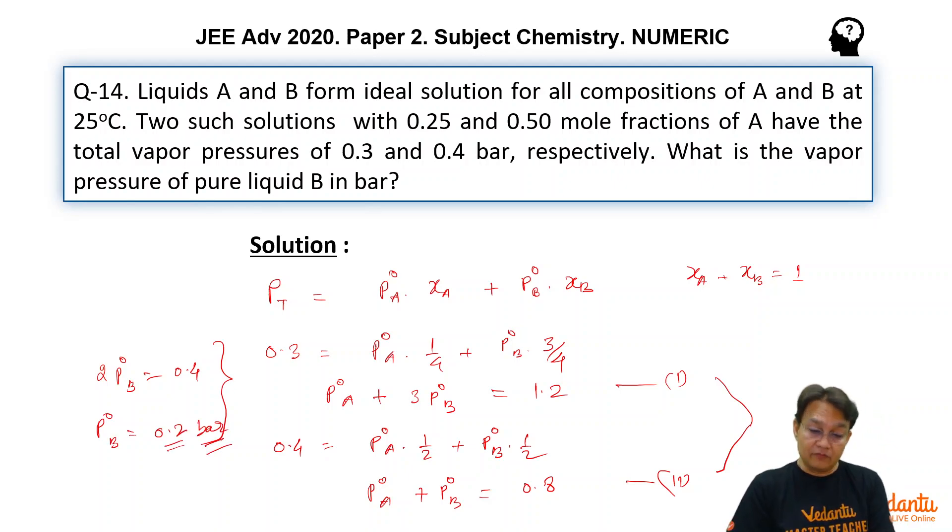Pretty straightforward question on binary liquid solutions which are following Raoult's law, that means they are ideal. That is the only possible question looking into the complexity of other kinds of real solutions and their problems. So that is quite an expected question.